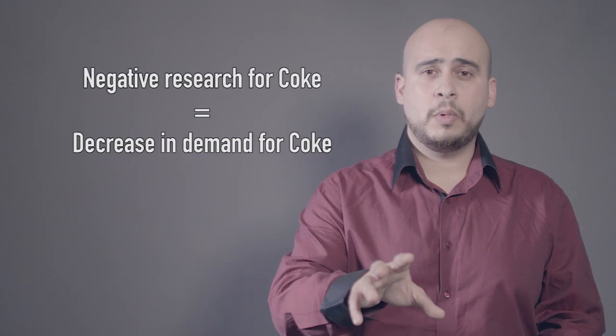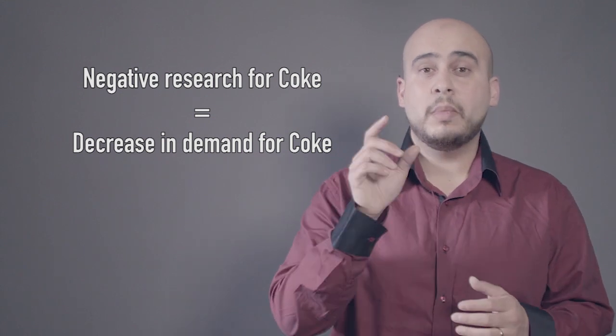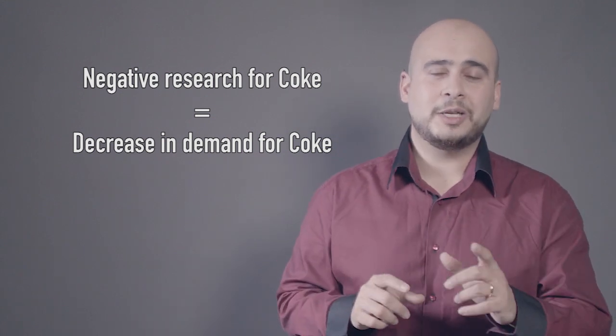Let's look at the reverse example — let's say Coke. There is a research published that says Coke has harmful chemicals for the body that could be cancerous. In that situation, the demand for Coke will decrease, not the quantity. So if it is quantity demanded, it has to be the price of the product. If it is demand, it has to be other factors, because for the law of demand and supply to hold, everything remains constant. If that constant part does not hold, it is demand that is being affected.